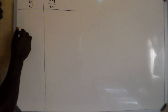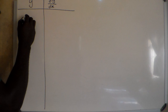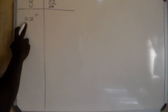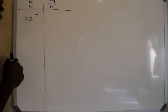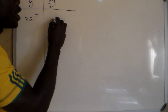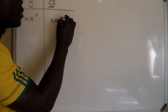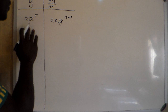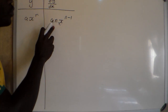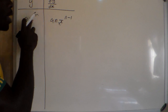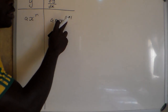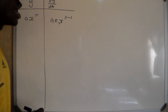So let's say we have to derive y equals ax to the power n. This is a standard integral where a is a constant number and n is the exponent. The derivative of ax to the power n is equal to anx to the power n minus 1. That means we multiply the constant by the exponent, then subtract 1 from the exponent.